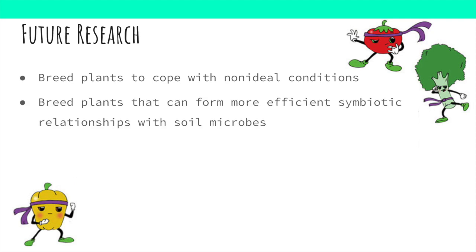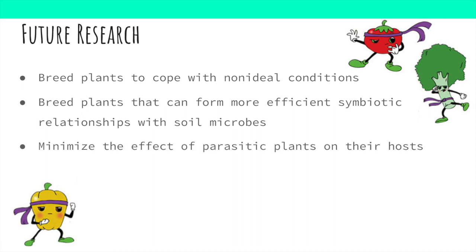We can also try to breed plants that are more efficient at forming symbiotic relationships with soil microbes to promote plant growth. By breeding plants that produce higher levels of strigolactone, we can possibly create plants that are better at attracting microbes to their roots. Research could also be done on how to minimize the negative effect that parasitic plants, such as witch weeds, have on their hosts — this is especially problematic in subsistence farms in Africa, where these parasitic plants are very commonly found. Overall, strigolactone research has great potential to help solve issues in agriculture and horticulture.